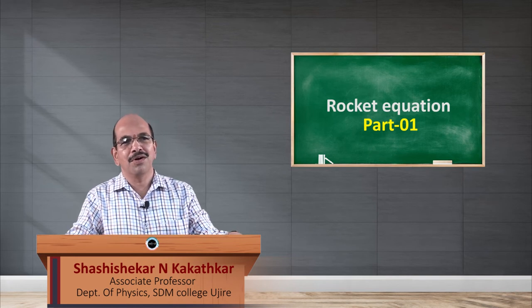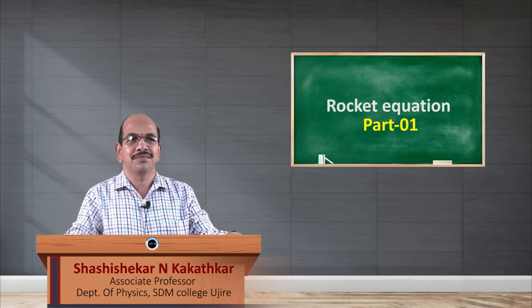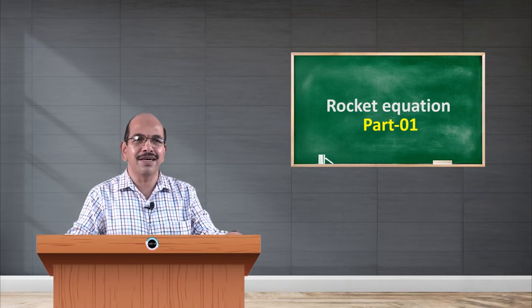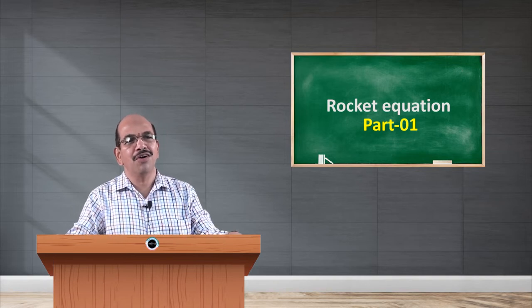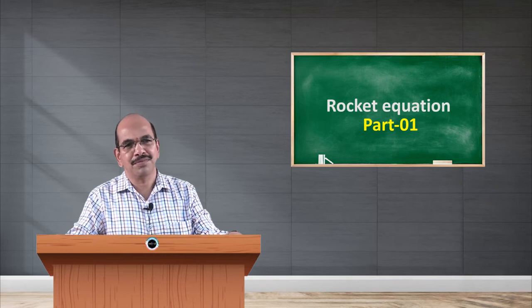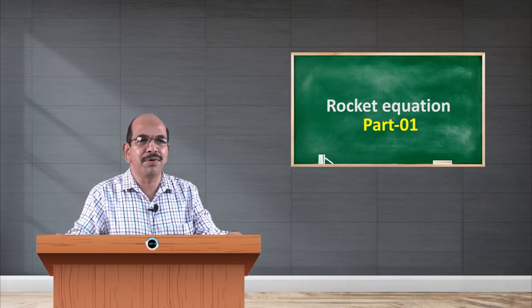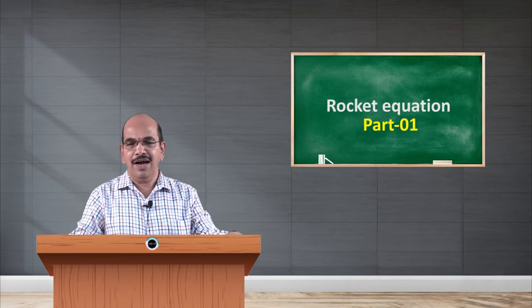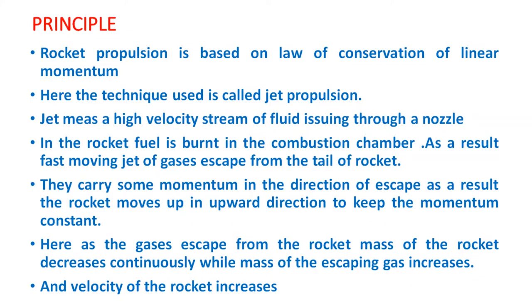Basically, all of us know a rocket is launched in space either to inject satellites at specified positions or for astronauts. Now, let us look into the principle behind the rocket equation and the launch of a rocket. As all of us know, the law of conservation of linear momentum states that the total momentum of a system in the absence of external force remains constant. This is the basic principle behind rocket propulsion. The technique used here is called jet propulsion.